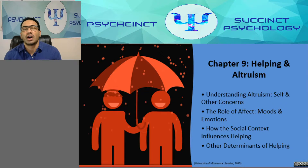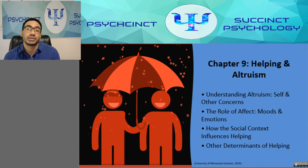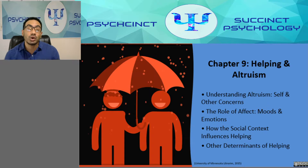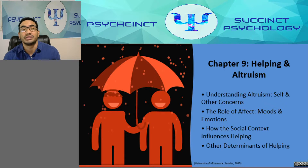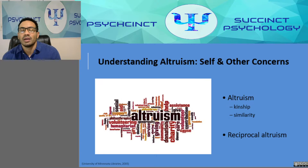Chapter 9 focuses on helping and altruism. The topics we'll be looking at include understanding altruism, the self and other concerns, the role of affect, moods and emotions, how the social context influences helping, and other determinants of helping.